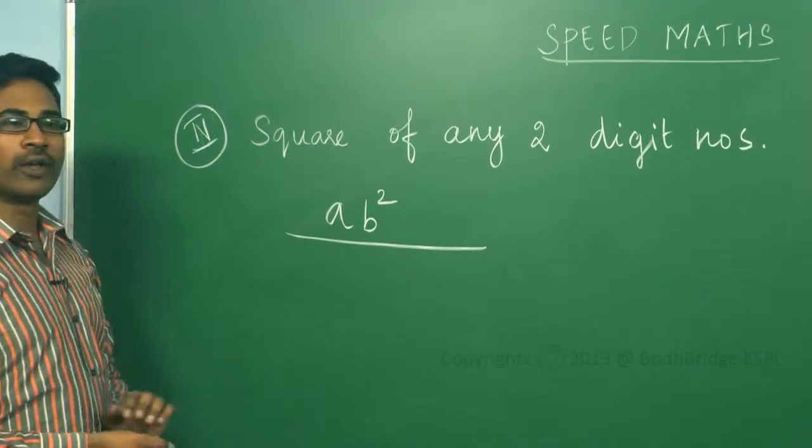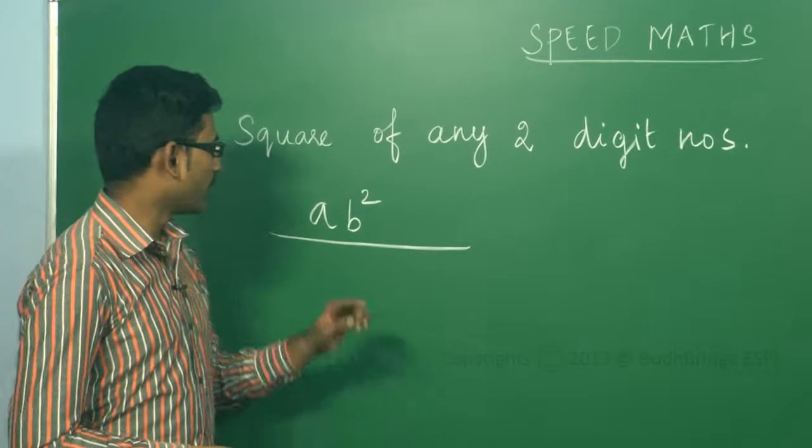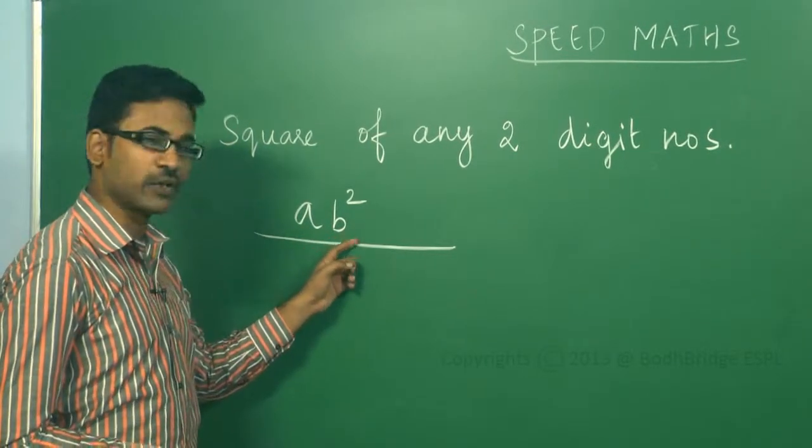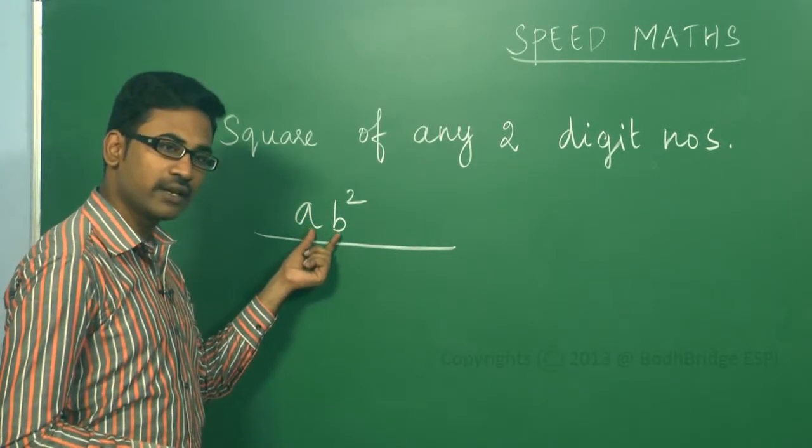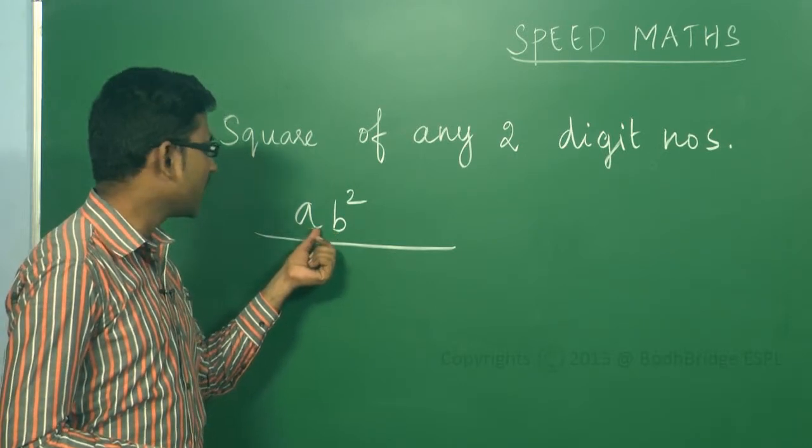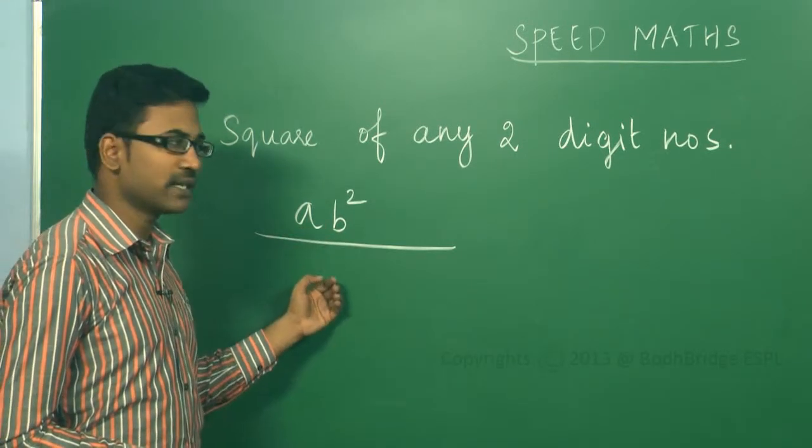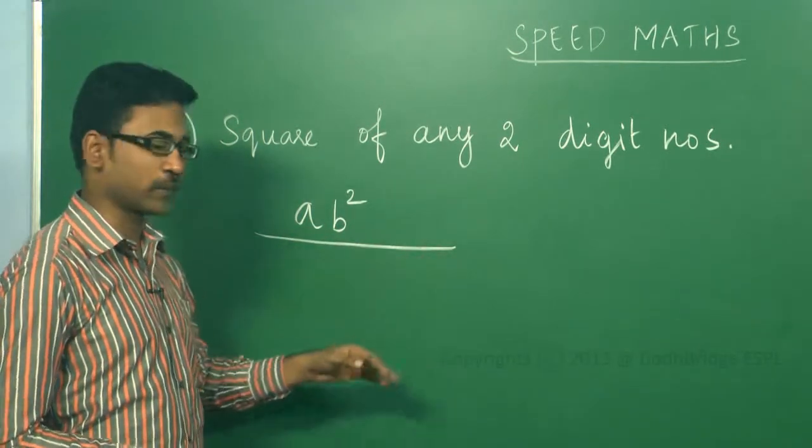This is to find the square of any two-digit number. If the number is like ab squared, we consider a number having two digits a and b. I will tell the procedure, then we will take an example and proceed.